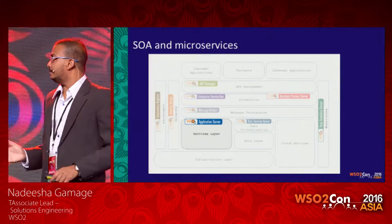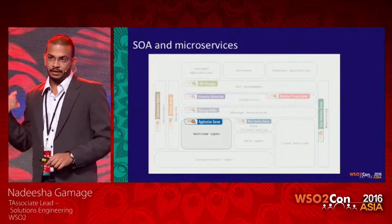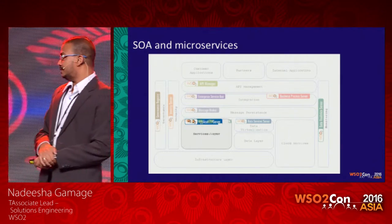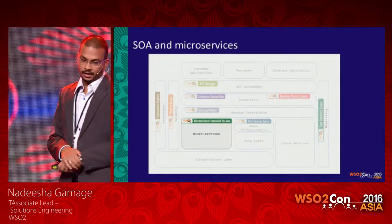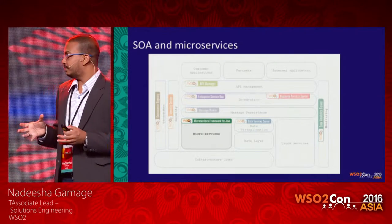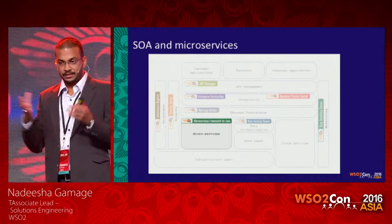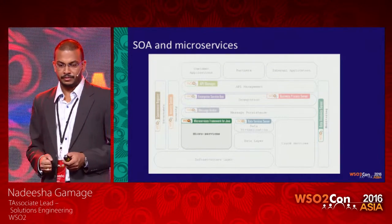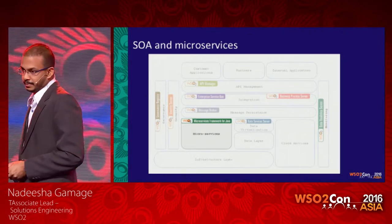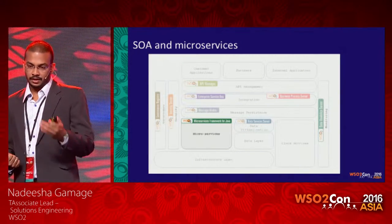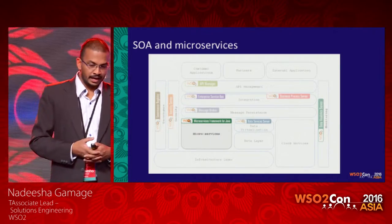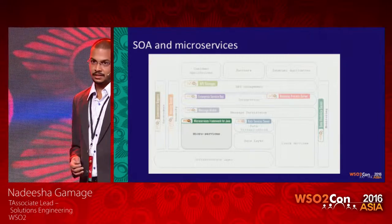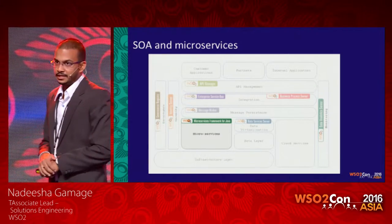This diagram extends the earlier reference architecture into microservices. When moving to microservices, the services layer is replaced with a microservices hosting environment. WSO2 provides a microservices framework for Java for this purpose — a framework that allows you to create microservices based on JAX-RS, using most of the standard JAX-RS annotations.